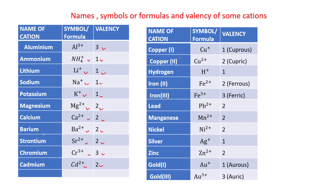Some elements show more than one valency. Copper(I): Cu+, valency is 1, and this is commonly known as cuprous. Copper(II): Cu2+, valency is 2, and this is called cupric.